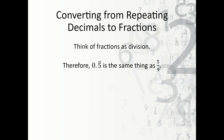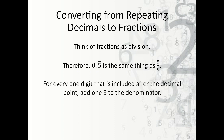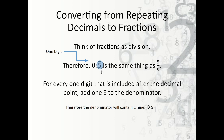Now what happens if we have repeating decimals? For every one digit that is included after the decimal point and is repeating, we add one nine to the denominator. So 0.5 repeating is the same thing as five over nine. In this case there is one digit after the decimal point that is repeating, so we include one nine — making it five over nine.